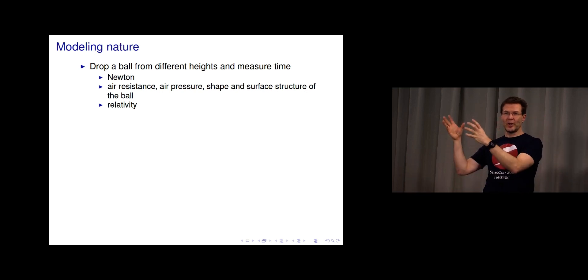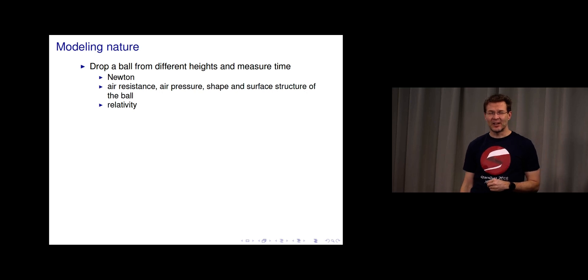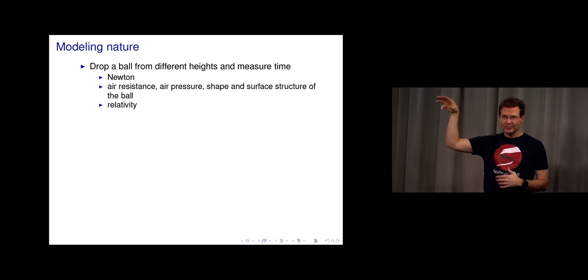But then maybe we need to take into account the air resistance. You know that if you drop an air balloon, it will drop much more slowly than if you drop a metal ball, with air pressure effects, shape, surface structure of the ball. For satellites which are kind of dropping all the time but miss the earth, we need to take into account relativity.